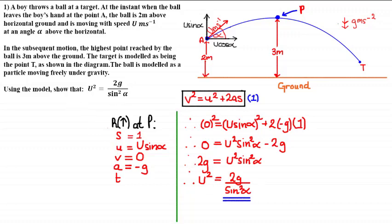Inspecting terms in the equation gives you a good idea of which direction of motion to consider, and choosing the right point in the path was really important for proving the equation. Some of you may be thinking — why didn't we choose a different point, say point T? Had you chosen T, you'd find that we haven't been given enough information to work out the vertical displacement at that point, and we also don't know the final velocity there, so we wouldn't have had enough information to prove the equation.